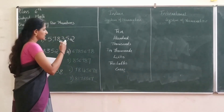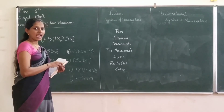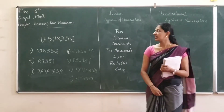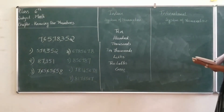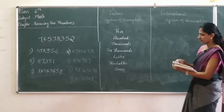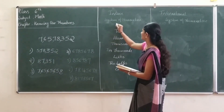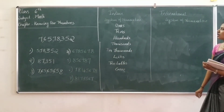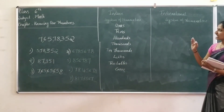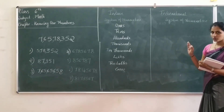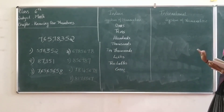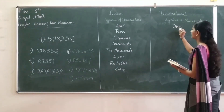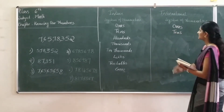It is the same in the international system of numeration: ones, tens, hundreds, thousands, ten thousands — these are the same as the Indian system of numeration, up to ten thousands.